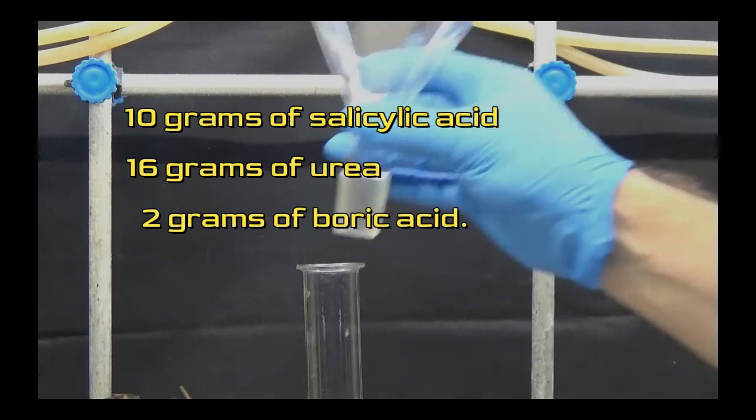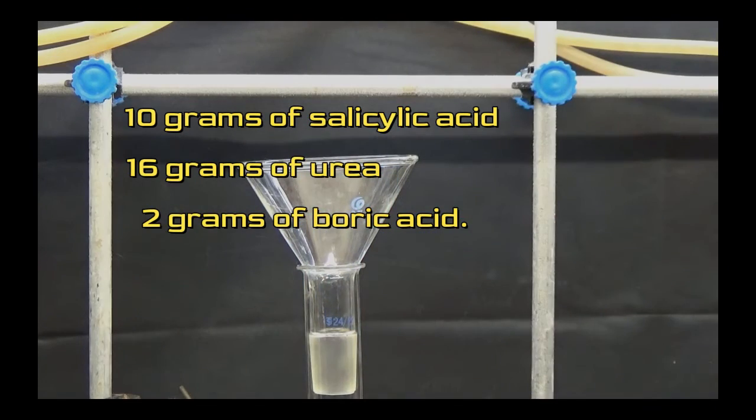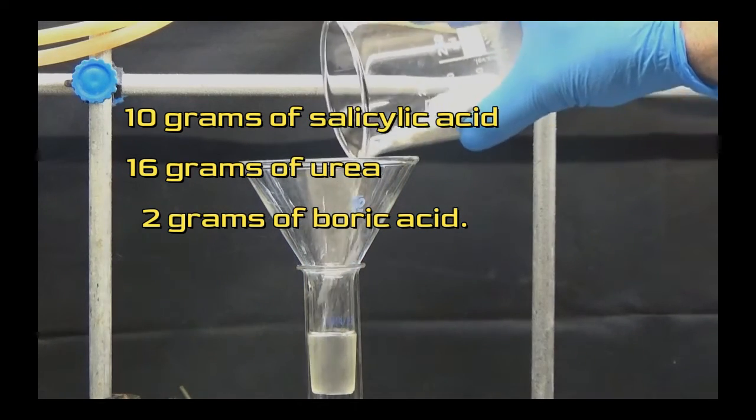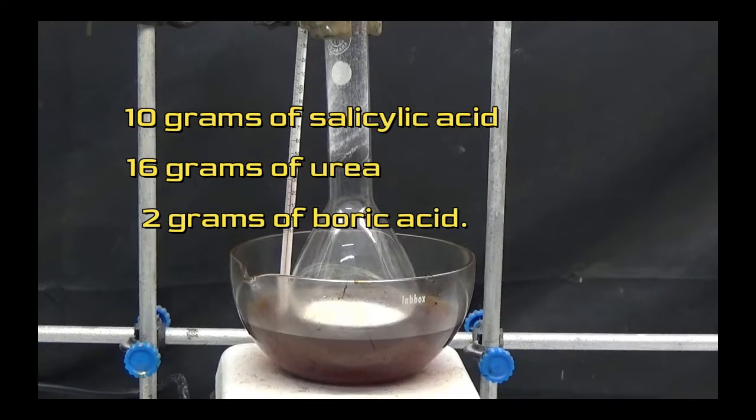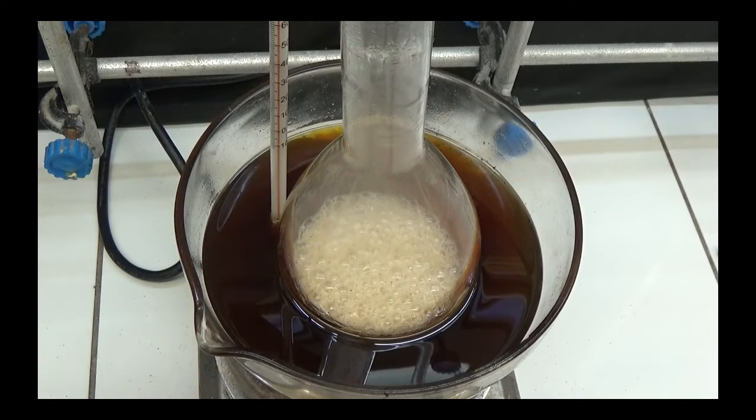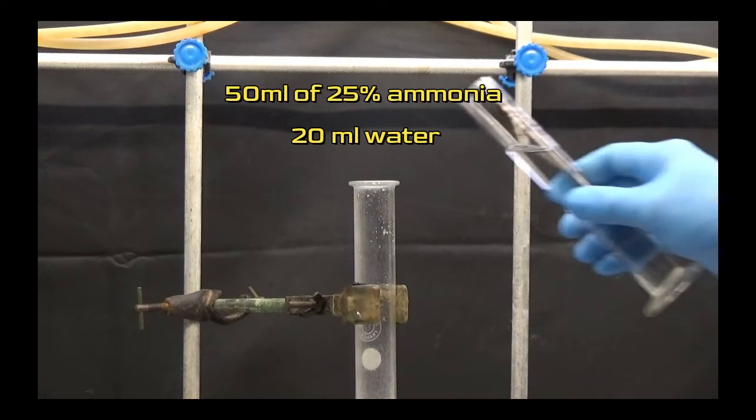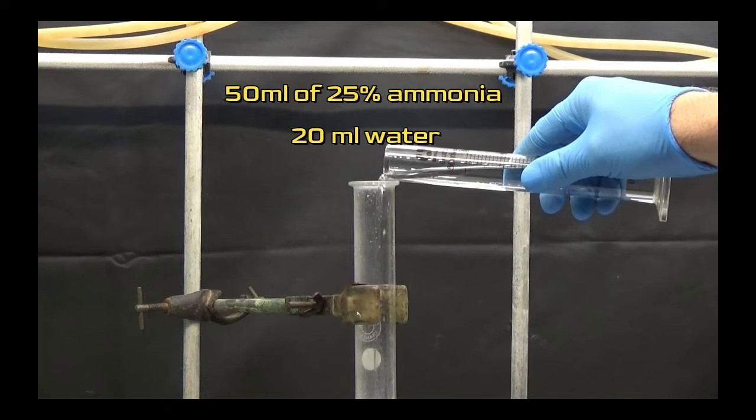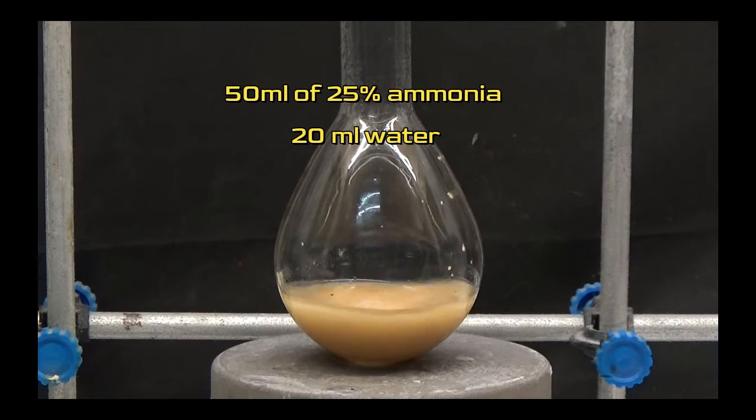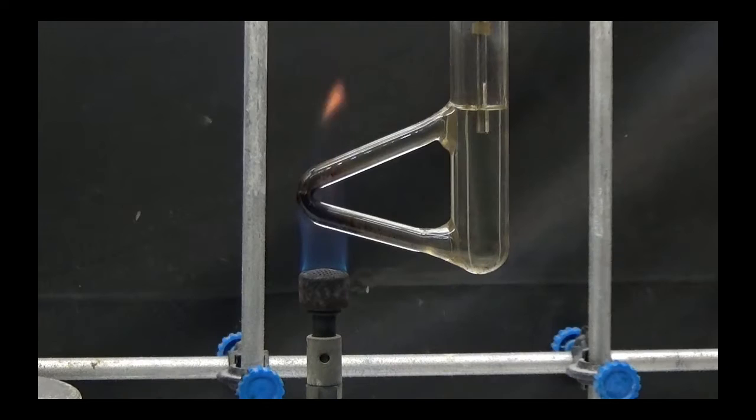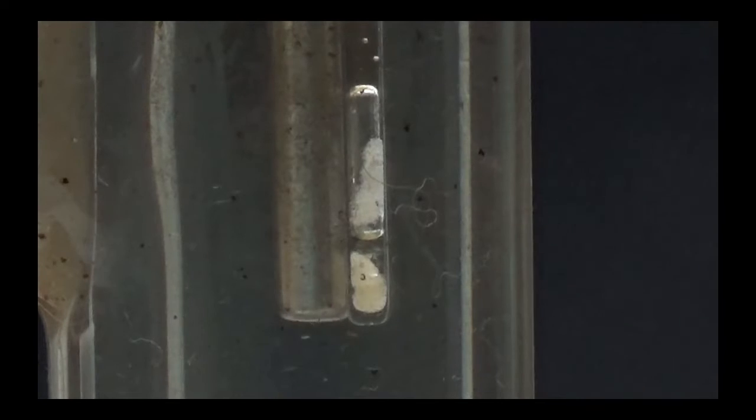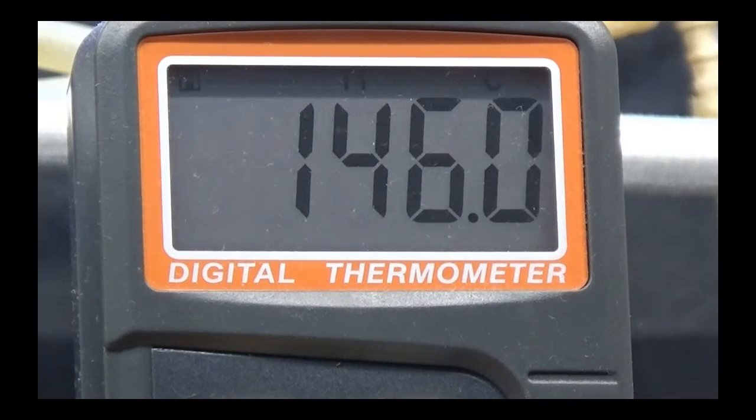In a second identical operation, I reacted 10g of salicylic acid with 16g of urea and 2g of boric acid. I heated it for 2 hours in an oil bath at 180 degrees. After adding the ammonia, I added 20ml of water and boiled it for 30 minutes. It yielded better results and the melting point of the obtained product was closer to 144 degrees.